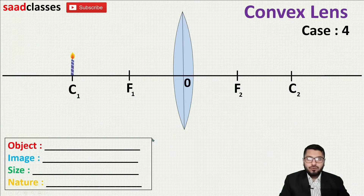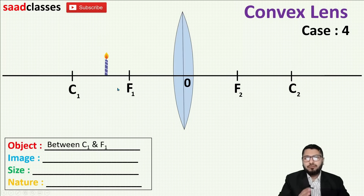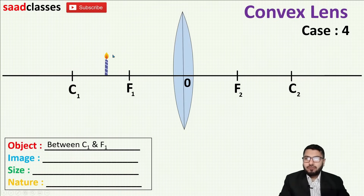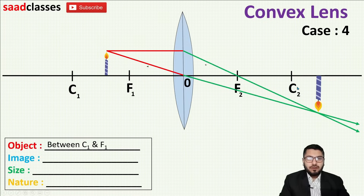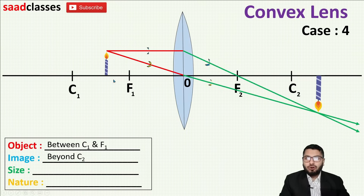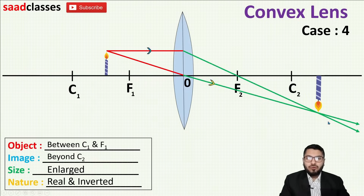In case number four, I bring my object closer and place it between C1 and F1. Applying the same rules: a ray parallel to the principal axis passes through focus after refraction; another ray passes through the optical center and goes undeflected. They cut at a point beyond C2, so the image is formed beyond C2. The size is enlarged — the image is larger than the object. The nature is real and inverted.